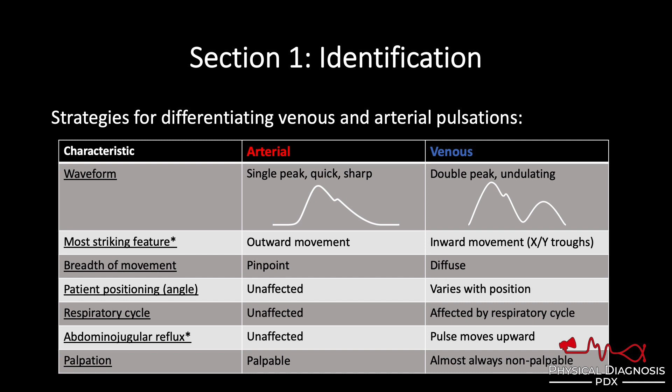The arterial pulse is unaffected by patient position, the respiratory cycle, and abdominal pressure. The reason is anatomical: we see and feel the carotid where we do, and the radial where we do, because that's where those vessels course closest to the surface of the skin — and that is completely independent of patient position, respiratory cycle, and so forth. The venous pulse, on the other hand, will be affected by all of those things.